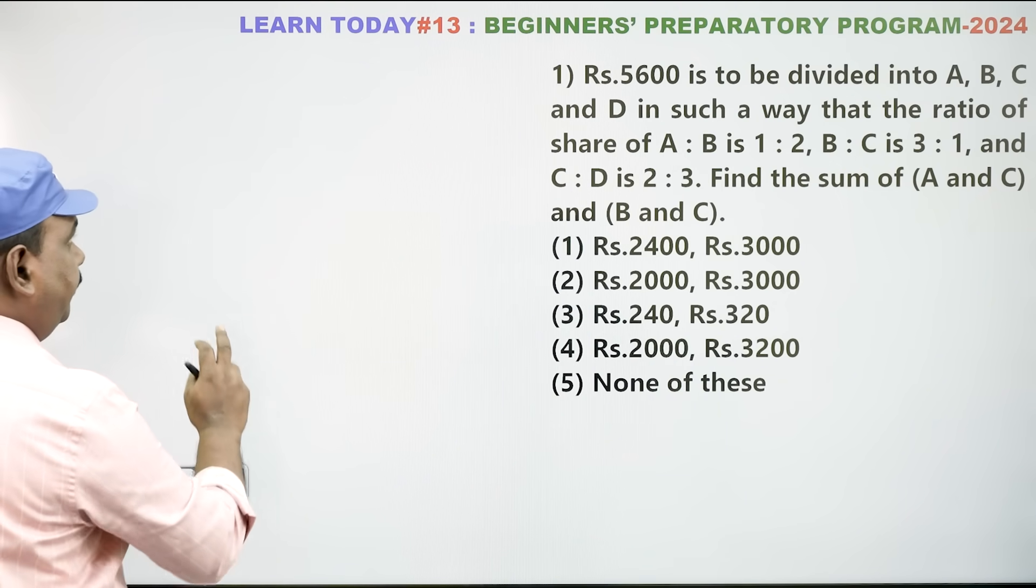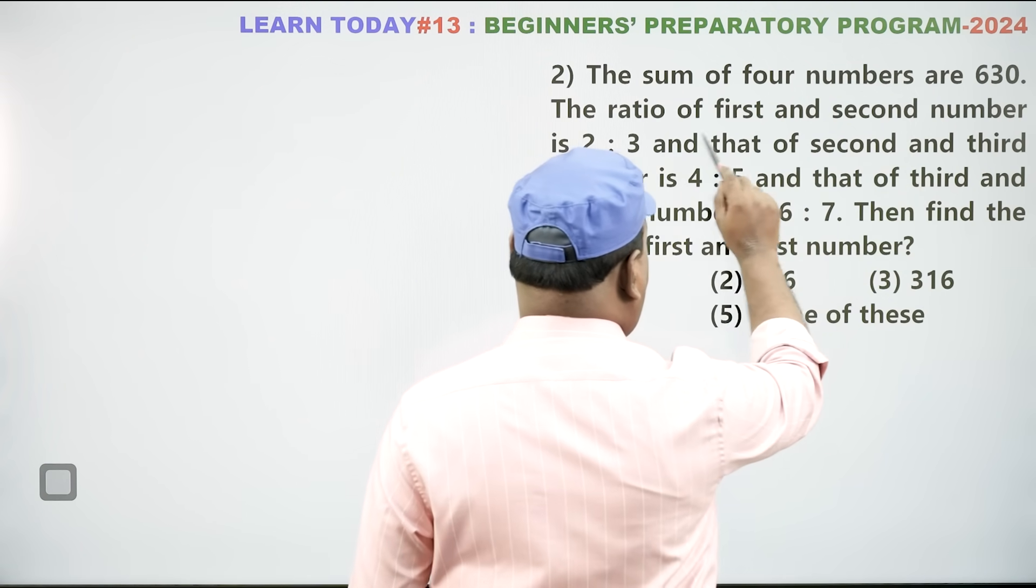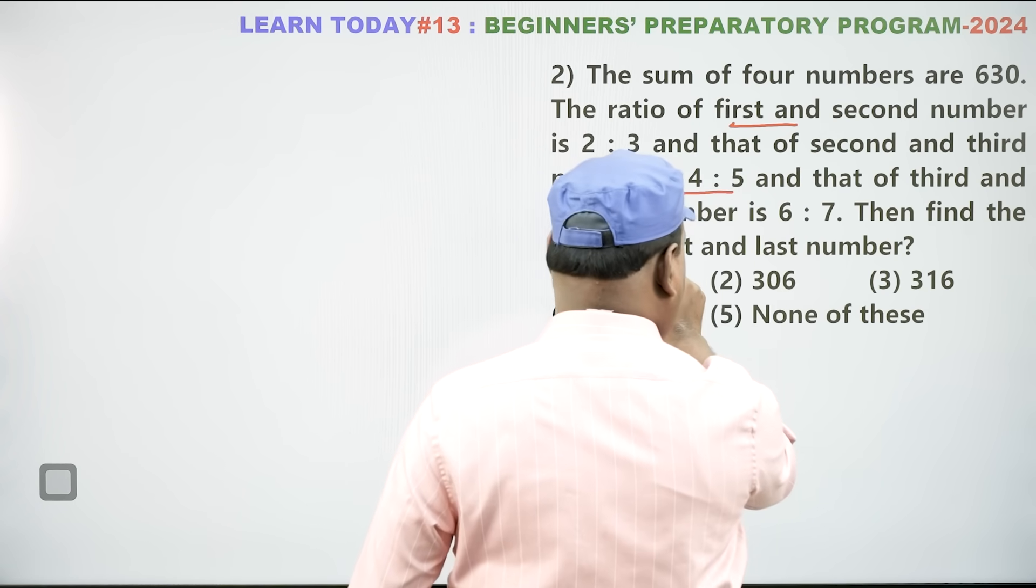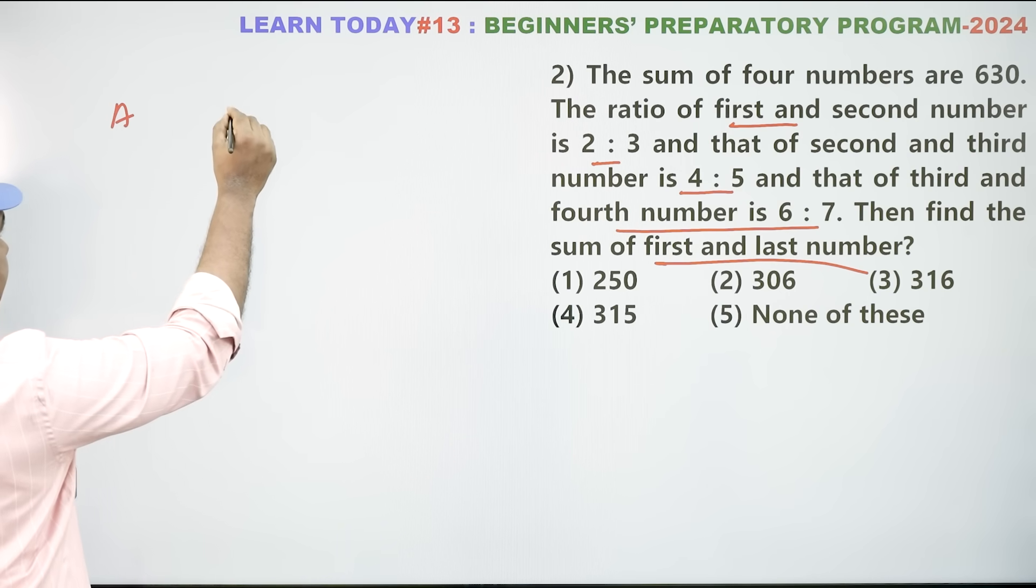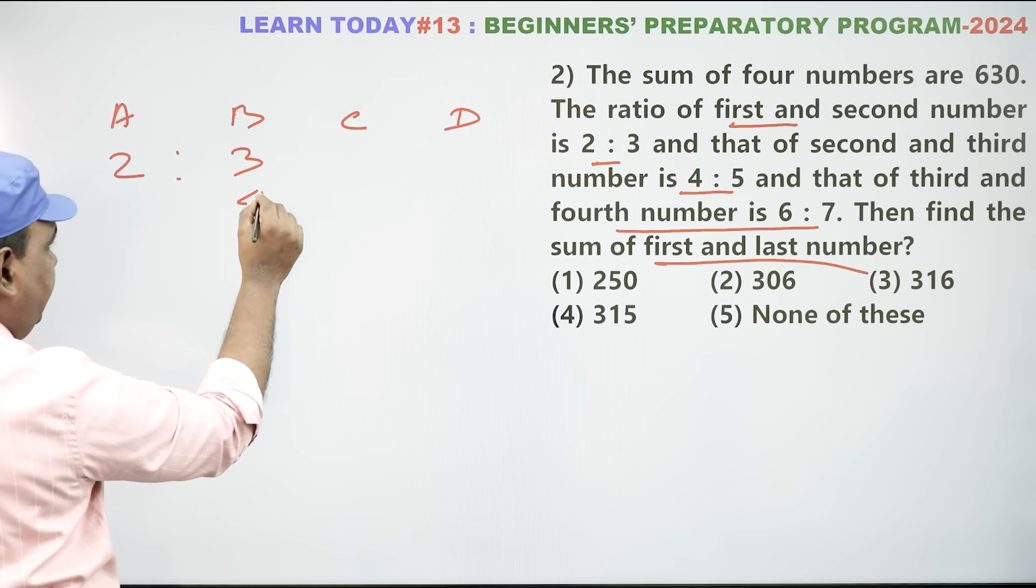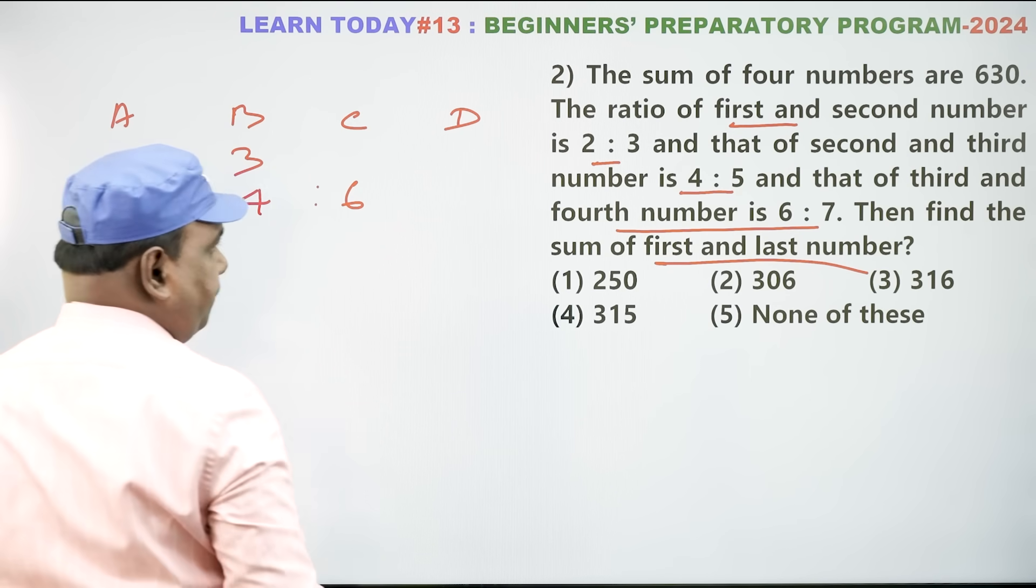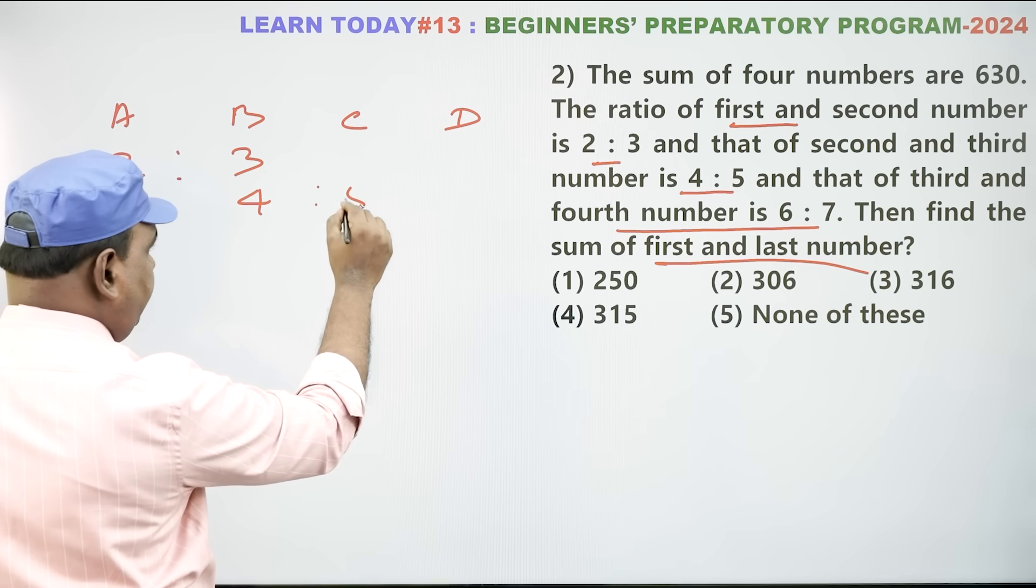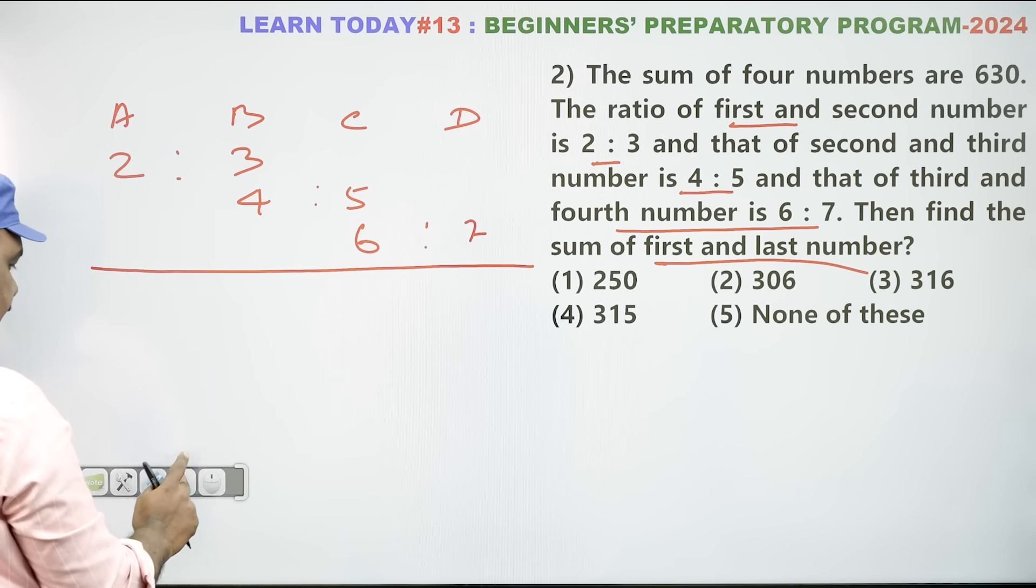Next, question number 2. Rs.630 divided among 4 numbers. Second number ratio 2 is to 3. Second and third 4 is to 5. And third and fourth 6 is to 7. Then find the sum of the first and last. Say for example, A, B, C, D - first, second, third and fourth. First second 2 is to 3. Second, third 4 is to 5. Third and fourth again, 6 is to 7. Convert method, direct convert method, repeat method.